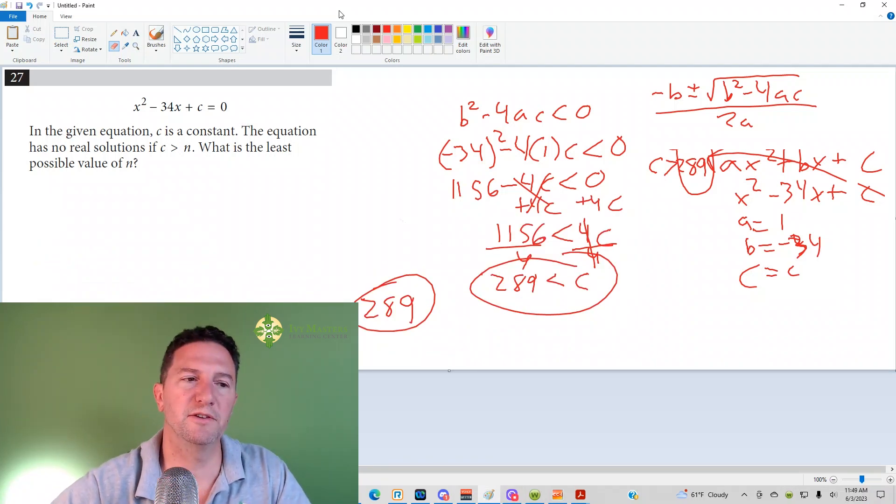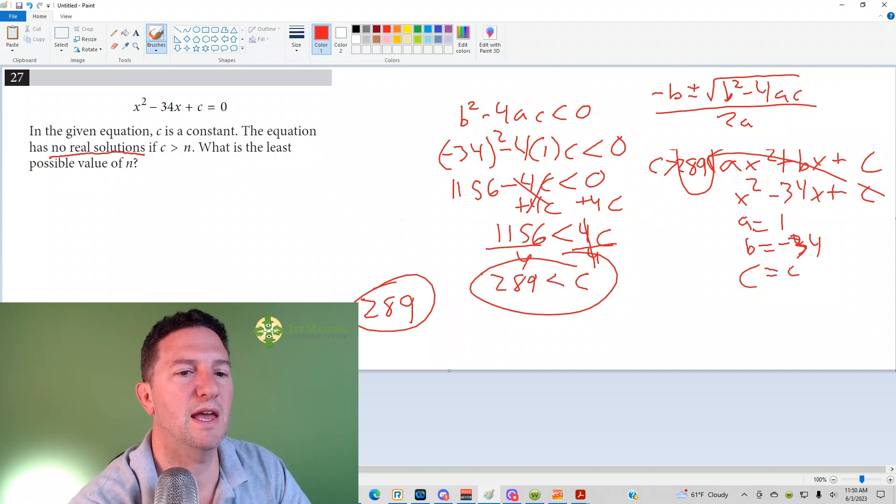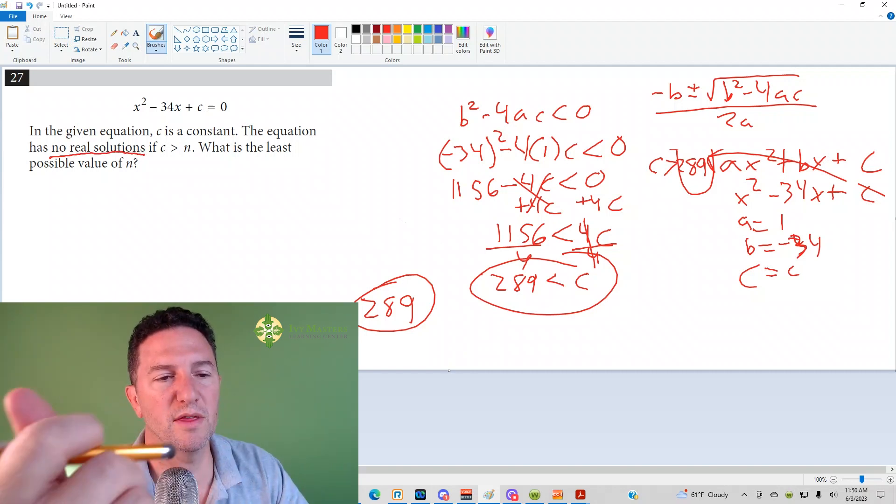This is the 27th question from Linear Digital SAT Test 1, Module 2. It reads: In a given equation, C is a constant. The equation has no real solutions, and if C is greater than N, what is the least possible value of N? C is greater than N.